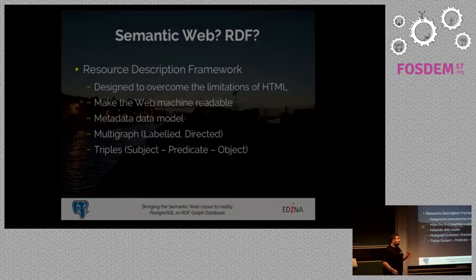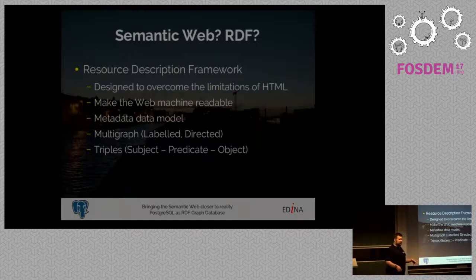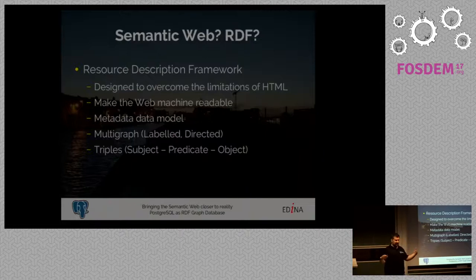The way to do it, some people think, is to add metadata to everything. One way to add metadata to everything is RDF, which is a data model that lets you turn everything into a graph — actually a multi-graph, because multiple objects can have multiple things pointing to them.